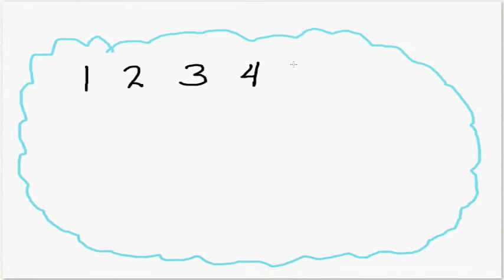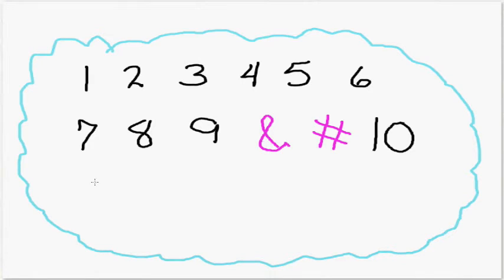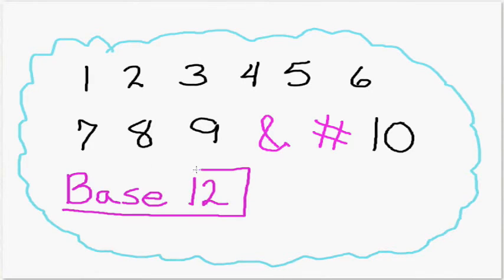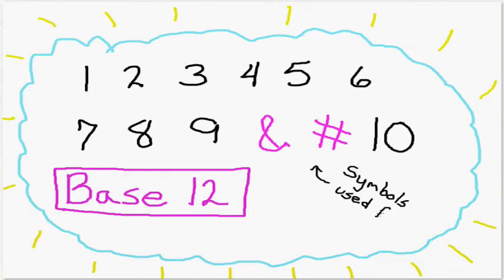Base 8 might be neat to think about, but its advantages over base 10 are questionable. But what if instead of removing two numbers from the system, I conjured up two new numbers and added them in? Now we would be in a base 12 system, and base 12 has much more apparent advantages.